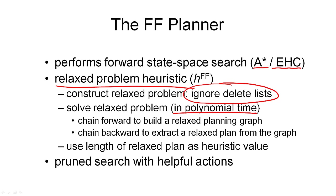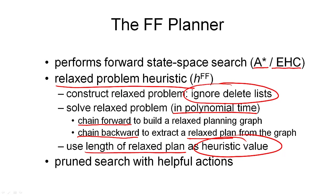The solving of the relaxed problem works in two steps. The first step is a forward chaining step, where we build something similar to the planning graph we've seen earlier — but this time it's a planning graph for the relaxed problem that contains far fewer edges and information. Then in the second step, we chain backwards from the last layer in this graph to extract our relaxed plan. While the forward chaining is quite similar to what GraphPlan does, the backward chaining is actually quite different. The result of backward chaining is a relaxed plan, and to compute the heuristic we simply take the length of the relaxed plan — the number of actions in that plan — as our heuristic value. That is the relaxed problem heuristic, or ignoring-delete-list heuristic, used by FF.